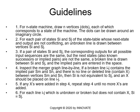Five: if any x's were added in step four, repeat step four until no more x's are added. Six: for each line Ij which is unbroken, or broken but does not contain x, Si will be equivalent to Sj. This is a simple visual method to determine equivalent states — all lines between Si and Sj that are either unbroken or broken without x mean they are equivalent. If there is an x, Si is not equivalent to Sj.